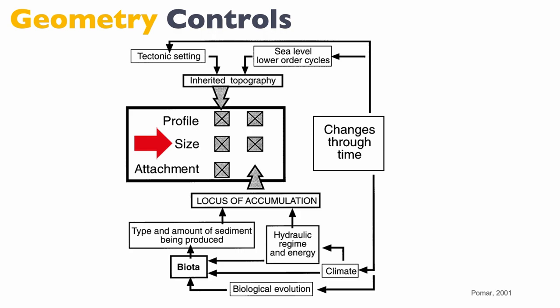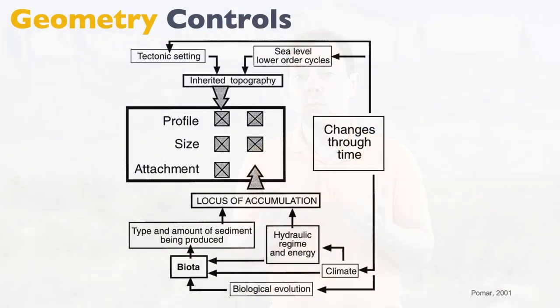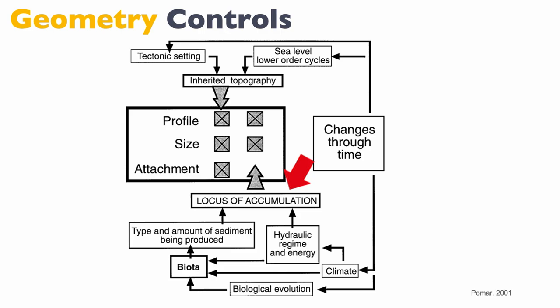You can also look at the size of this particular buildup — is it a big platform, is it a small platform, are we looking at a giant epeiric-type platform like in the Middle East — and whether or not your platform is attached to a continent. There are really two main families of processes that control this: one is the inherited topography, and the other one is the location of where sediments accumulate, known here as the locus — which is Latin for position or location — of accumulation.